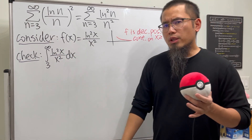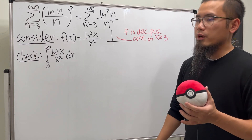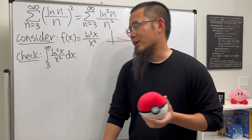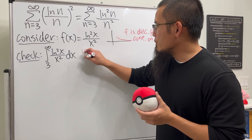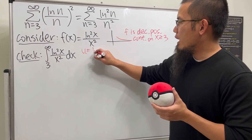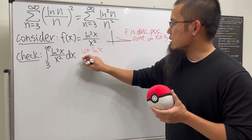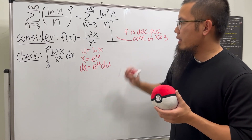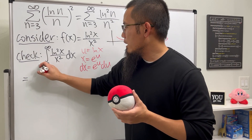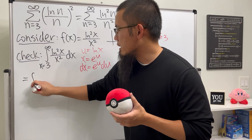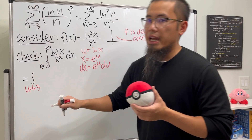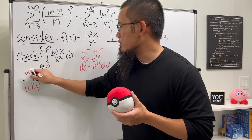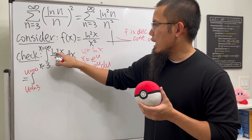Let's check the corresponding improper integral: the integral from 3 to infinity of ln²(x) over x². We can do a u-substitution first. Let u = ln(x), so x = e^u and dx = e^u du. When x = 3, u = ln(3); when x → ∞, u → ∞.